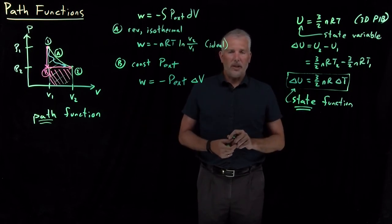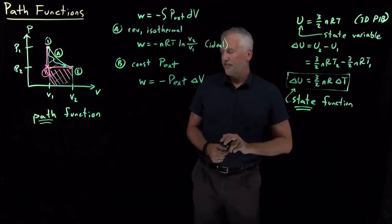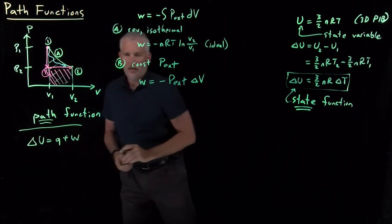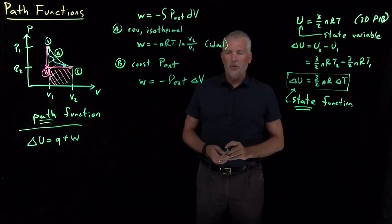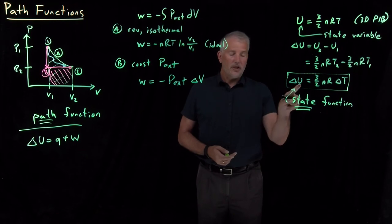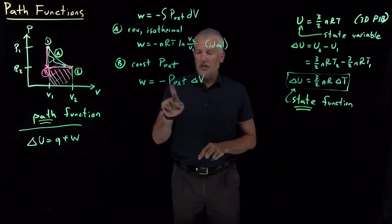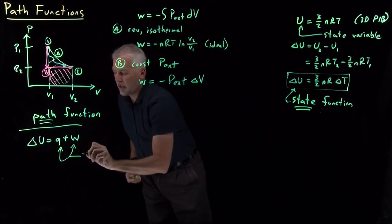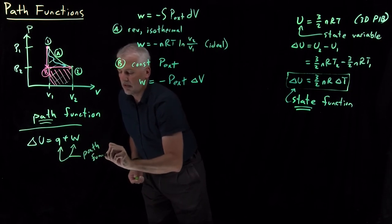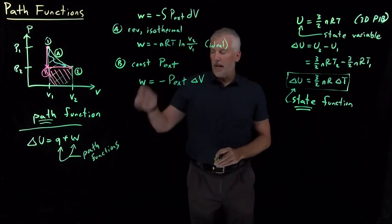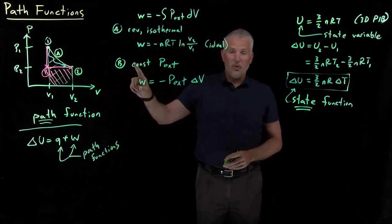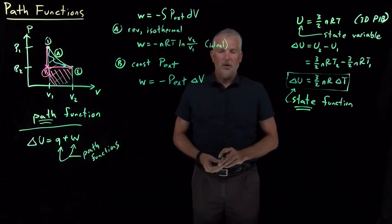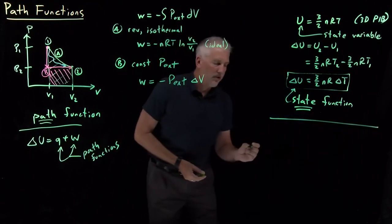This might seem a little confusing because we know a connection between energy and work. The first law tells us the change in energy equals some amount of heat plus some amount of work. If the energy doesn't depend on the path but work does depend on the path, how can both be true? Of course, that's because both Q and W are path functions, so any variability in the work due to the path is canceled out by an equal and opposite variability in the heat.